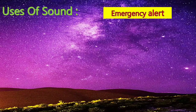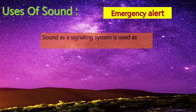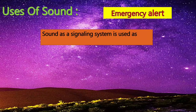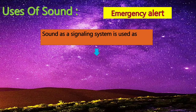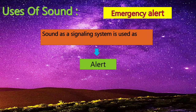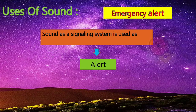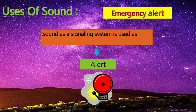Sound is also used for emergency alerts. Sound as a signaling system is used as an alert. Look at the scenario: the fire alarm warns us in an emergency. This mode of sound allows us to act spontaneously during an emergency.